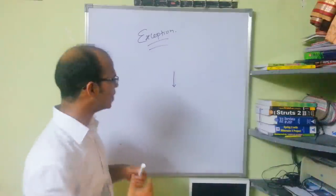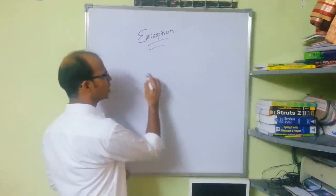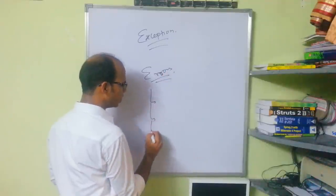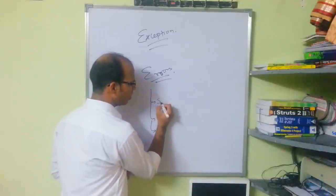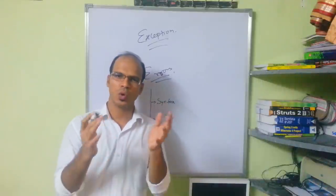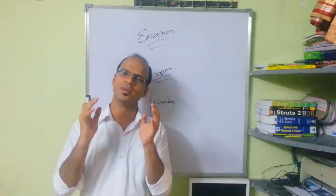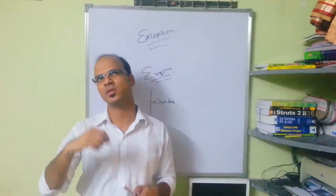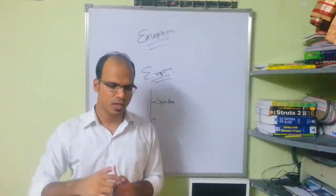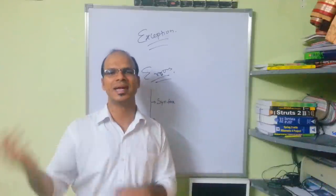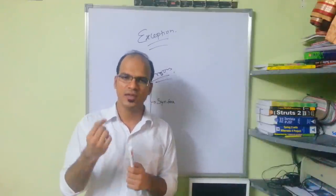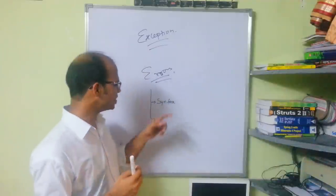When you talk about errors, we have multiple types of errors. The first type is called a syntax error. Whenever you write any code and you make a mistake in spelling — for example, in Java you have the System class, and if you write the spelling of System incorrectly, like S-I-S-T-E-M, replacing Y with I — it will give you an error, and that error is your syntax error.